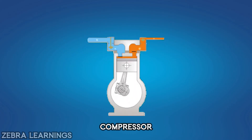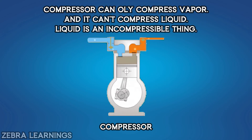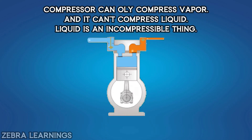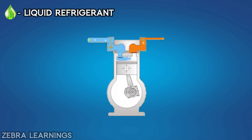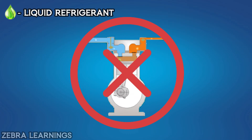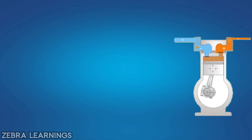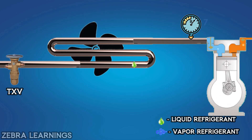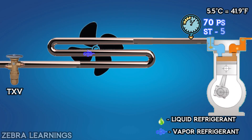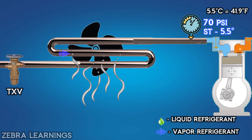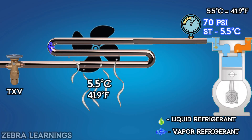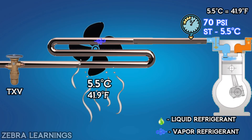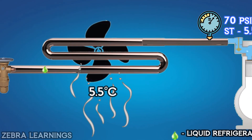As explained in our superheat and subcooling video, a compressor can only compress vapor and cannot compress liquid. If the refrigerant enters the compressor in liquid form, it will damage the compressor. If the R22 refrigerant inside the indoor unit is at a pressure of 70 PSI, its saturation temperature will be 5.5 degrees Celsius. So if we heat the indoor unit to 5.5 degrees Celsius, the R22 refrigerant starts boiling and turns into vapor.